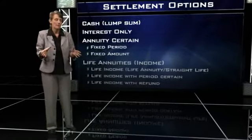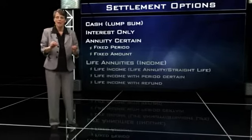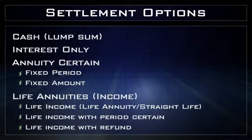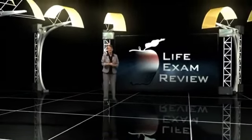To recap, the settlement options are cash, interest only, annuity certain — which includes both the fixed period and the fixed amount annuity — and life income. Under life income, there are three options: straight life, life with period certain, and refund life. Remember that joint and survivor could be added to any of those life income options. That's it for settlement options — thank you for joining me, and I hope this has helped you understand and learn settlement options.